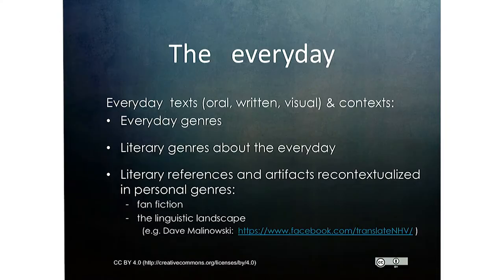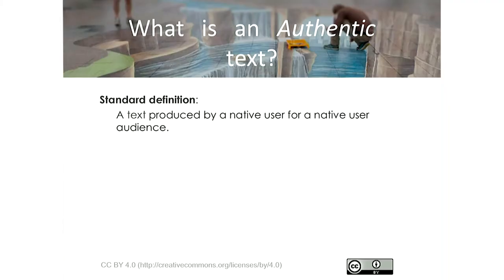We also have literary genres about the everyday — poems, excerpts from novels or literary genres of any kind but about the everyday. And also literary references and artifacts that are recontextualized in personal genres — for example, fan fiction or the linguistic landscape. Sometimes people will tag on a street sign or on some public space and add something to it — suddenly that becomes another layer of meaning that can be explored for meaning making if it's patterning out in a way fruitful for language acquisition. This leads to the question: what is an authentic text?